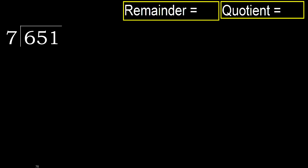651 divided by 7. 6 is less than 7, therefore we take the next digits: 65 is not less.